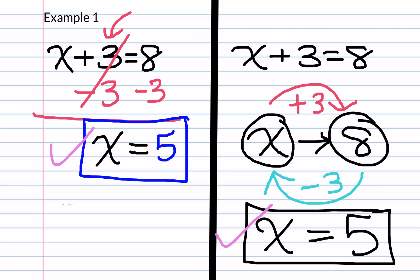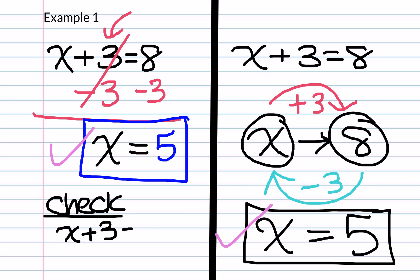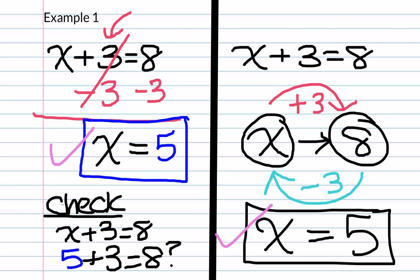Now in order to check that our work is correct, all we simply need to do, on the side of our paper, is write the word check and show our work. So we have the problem x plus 3 equals 8. Since we know that x is equal to 5, we substitute in — wherever we see an x, we put a 5 — and we want to ask, does this in fact equal 8? 5 plus 3 is 8, so that checks out.